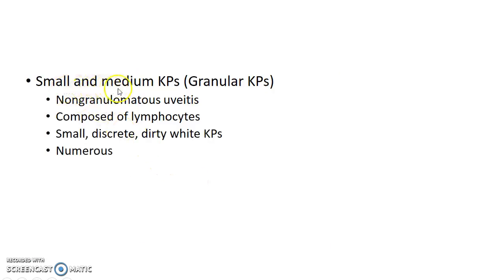Small and medium keratic precipitates, that is granular keratic precipitates, are seen in non-granulomatous uveitis. They are composed of lymphocytes. They are small, discrete, and dirty white keratic precipitates, and they are numerous.